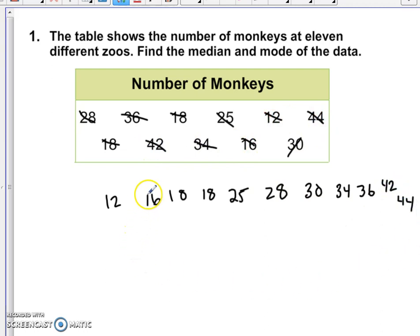Now what I want to do is eliminate the outermost values, and I want to continue doing this until I get to the middle. And it looks like I've crossed out five numbers on the left, five numbers on the right. So my median is 28.